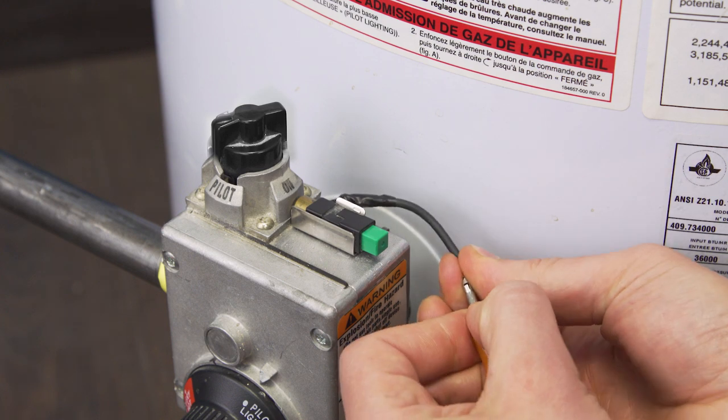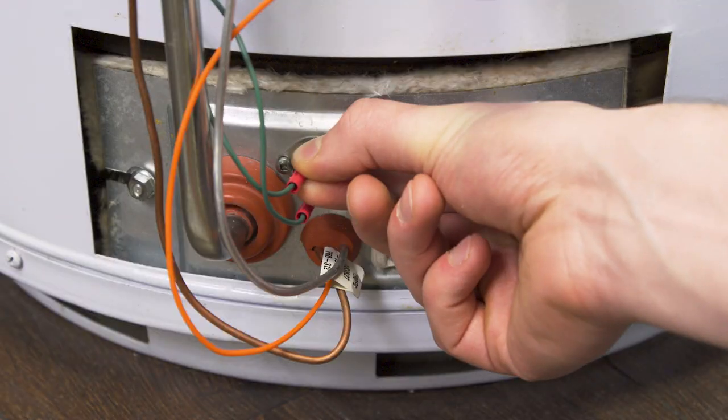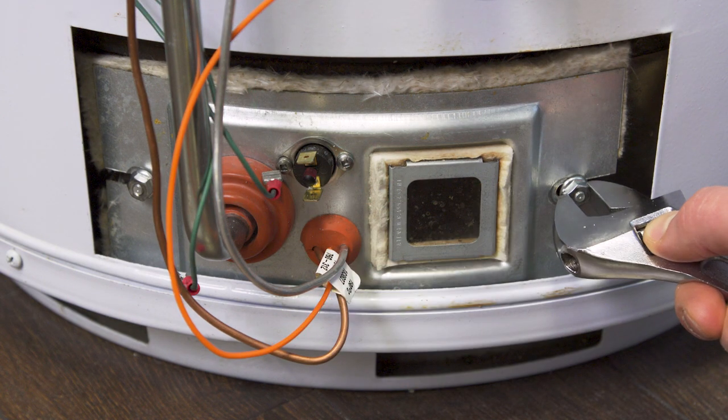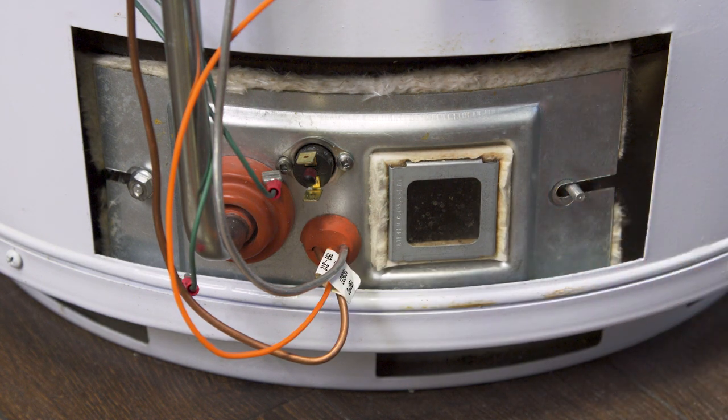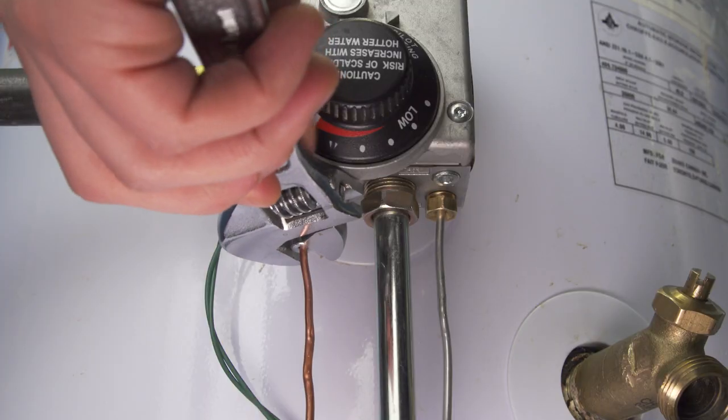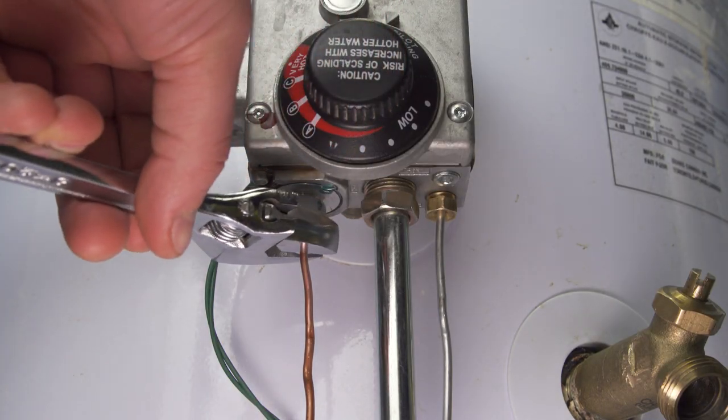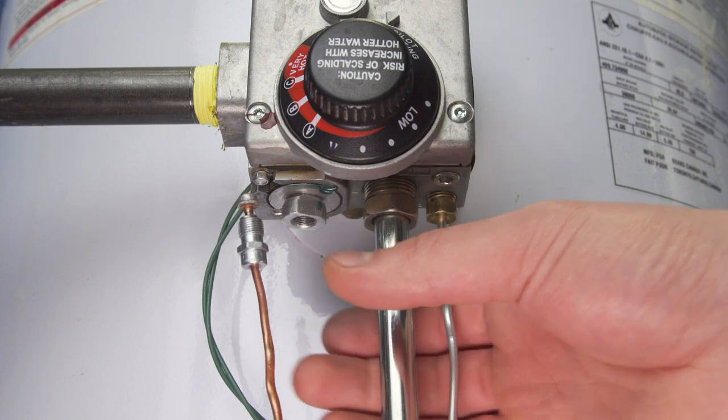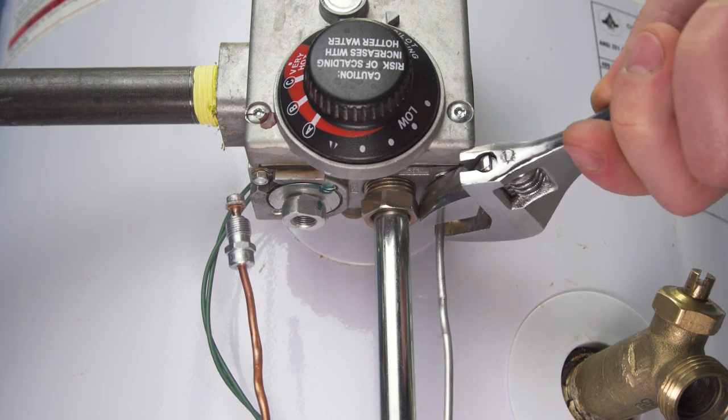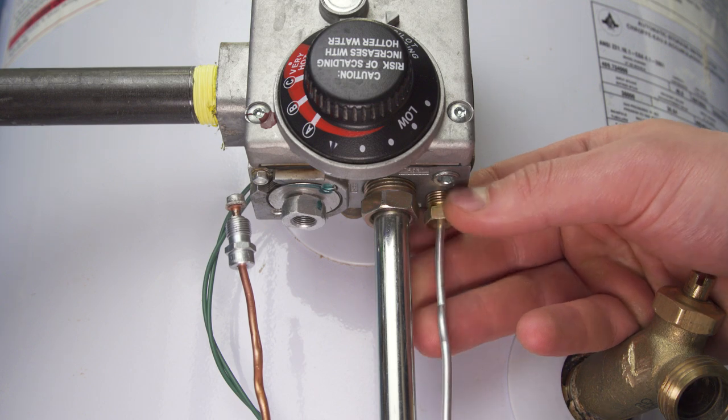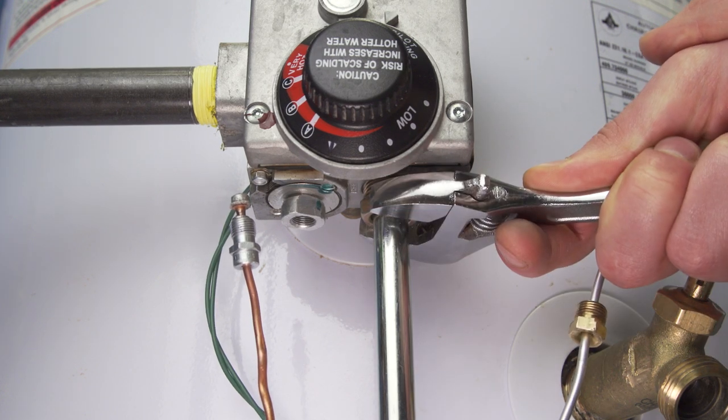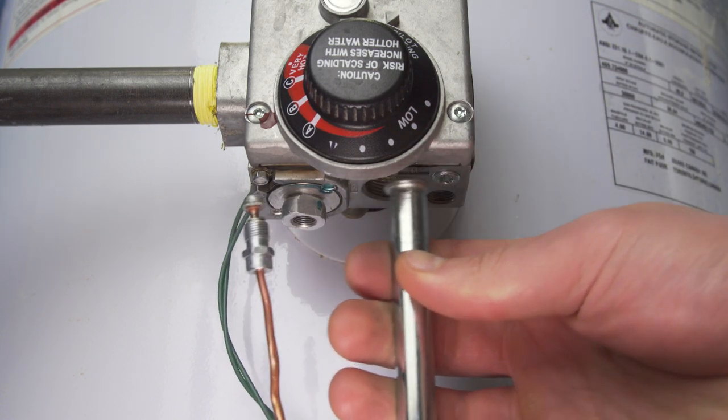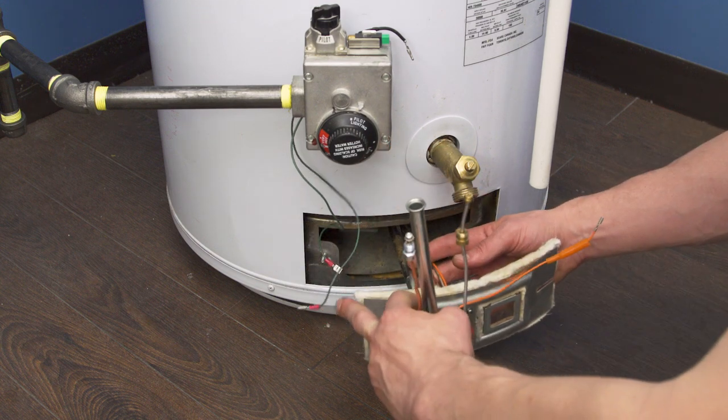Disconnect the igniter wire from the control valve. Next remove the wires from the thermal switch. Remove the two screws that hold the door in place. Use an adjustable wrench to unscrew the thermocouple. Next loosen and remove the pilot tube, but try not to bend or kink the metal. Unscrew and remove the manifold tube. Now slide out the whole burner assembly.